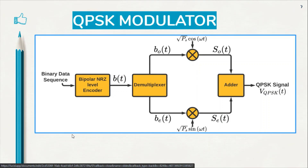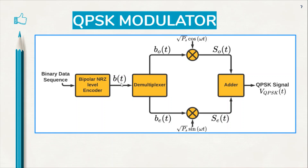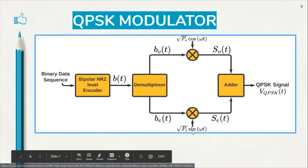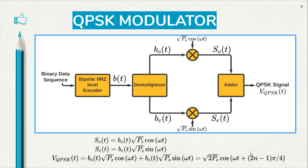Let us now have a look at the QPSK modulator. When the binary data sequence is given as input to the bipolar NRZ level encoder, we get the output data stream which is then demultiplexed into odd data stream and even bit data stream. They are multiplied with their respective carrier waves and then added to give the final QPSK modulated signal. The odd bit stream is multiplied by the cosine carrier wave while the even bit stream is multiplied by the sine carrier wave. QPSK waveforms can also be written as root(2PS) cos(ωt + (2n−1)π/4), where n can take the values 1, 2, 3 and 4 depending on the values of B0(t) and Be(t).